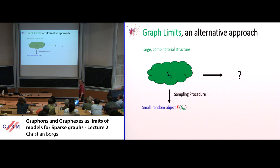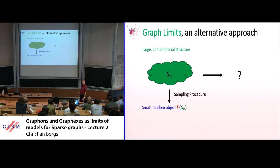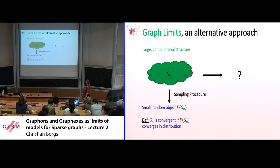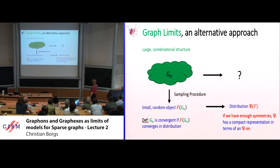For example, you could imagine Benjamini-Schramm convergence, where you take a random point in the middle, look at a ball of radius k, and output the induced subgraph on that. You have a parameter k which you sweep under the rug, and then you define the sequence to be convergent if this random object converges in distribution. The limit is a probability distribution over these finite objects, and if you're lucky with symmetry, there's a nicer representation for these distributions.